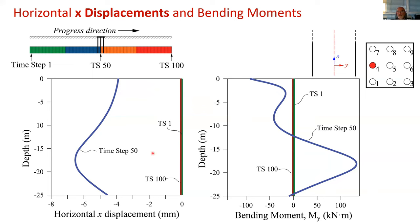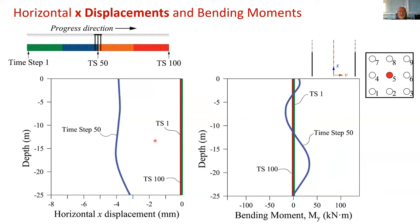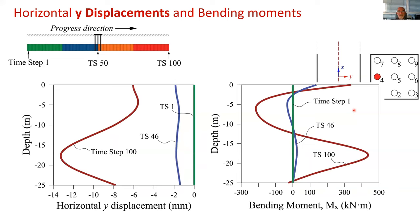If I look at another pile — pile number five, which is a little farther from the tunnel than pile four — the displacements for 100 meters of excavation are smaller than before, and the curvature is also smaller. Therefore the moments are significantly smaller. I could go from pile to pile looking at bending moments, shear forces, and normal forces — it is a complete solution.